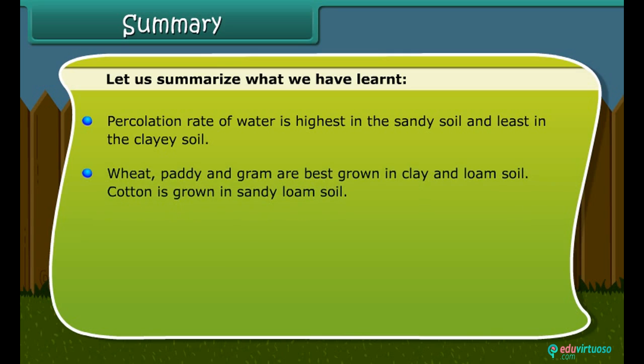Wheat, paddy and gram are best grown in clay and loam soil. Cotton is grown in sandy loam soil.